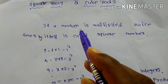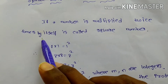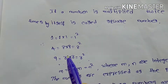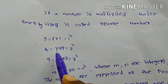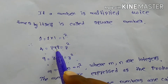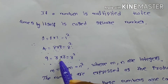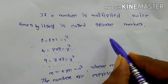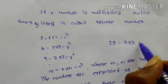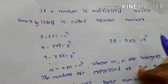What do you mean by a square number? If a number is multiplied 2 times by itself, that is called a square number. For example, 1 can be written as 1 × 1, which is 1 squared. 4 can be written as 2 × 2, that means 2 squared is 4. Similarly, 9 equals 3 × 3, which is 3 squared. And 25 equals 5 × 5, which is 5 squared.